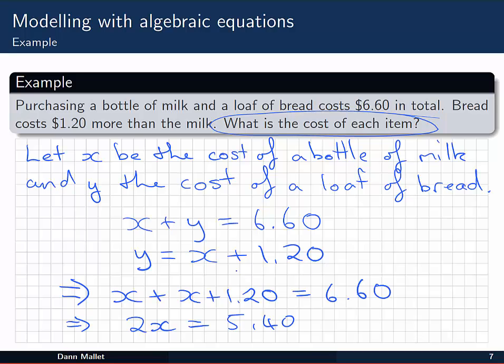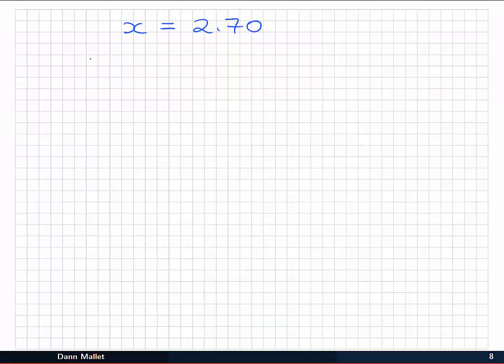I've figured out one of my variables. Now I'm going to go back to the second equation again. I could also use the first, but the second one looks better, I think, in this case. And replace x with $2.70. y is equal to $2.70 plus $1.20, or $3.90.